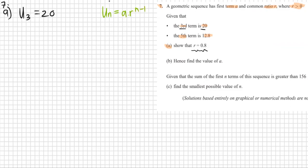That means we can say that u_3 is equal to ar², that's n minus 1 where n is 3. The next piece of information given is u_5, by the same logic, equals 12.8 and is also equal to ar⁴.